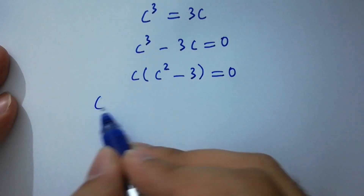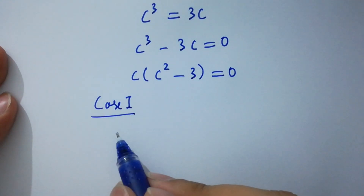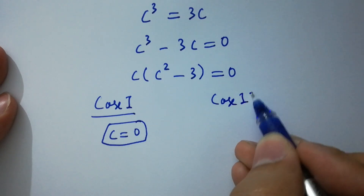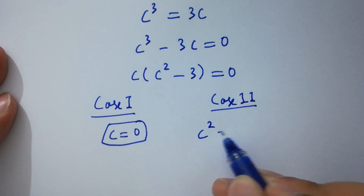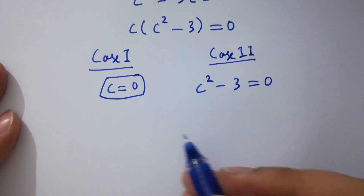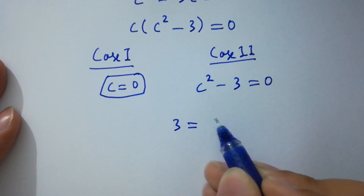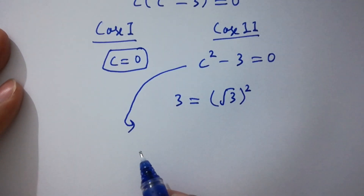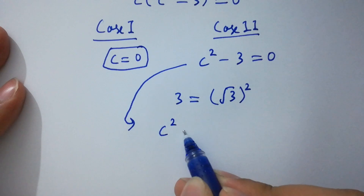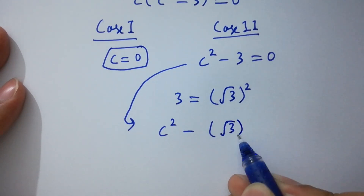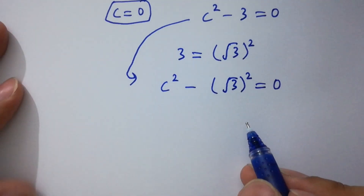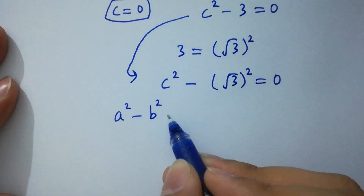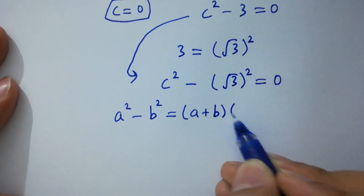We have 2 cases here. Case 1: c equals 0. The second case is c squared minus 3 equals 0. Since 3 equals square root of 3 squared, it can be written as c squared minus square root of 3 squared equals 0. Applying the formula a squared minus b squared equals a plus b times a minus b.